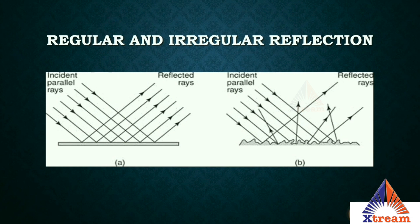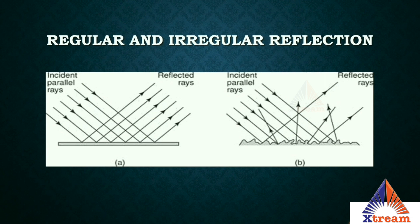There are two types of reflection: regular and irregular. In regular reflection, parallel rays incident on a surface are reflected in the same direction — for example, a mirror. In irregular reflection, parallel rays incident on a surface are scattered in different directions — for example, most non-luminous objects like paper or pen. You can see a piece of paper from any angle, but you can only see yourself in a mirror when standing directly in front of it.